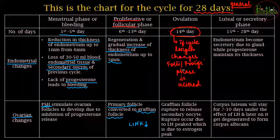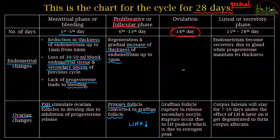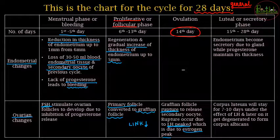There are no significant endometrial changes during ovulation itself — the ovarian change is the main event. The Graafian follicle ruptures and releases the secondary oocyte. This rupture occurs because the LH hormone (luteinizing hormone) reaches its peak — the LH surge — driven by the estrogen peak, causing the Graafian follicle to rupture and marking ovulation.